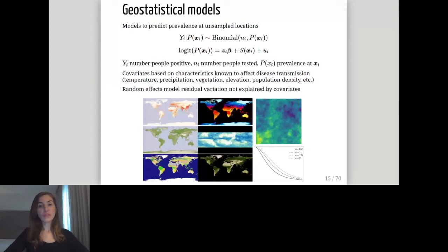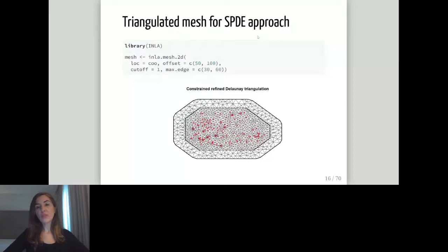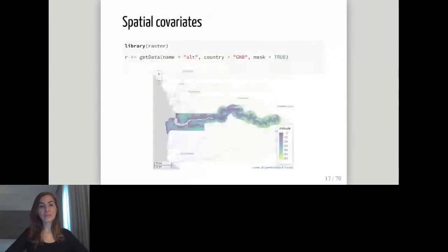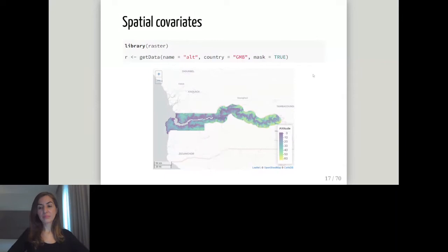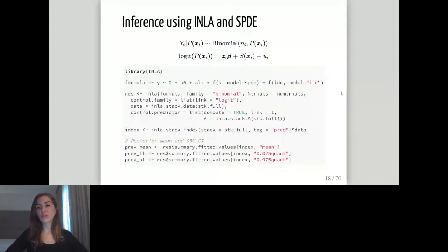To fit this geostatistical model in R, we can use INLA in combination with the SPDE — Stochastic Partial Differential Equation — approach. This approach approximates the continuous Gaussian random field by a discrete Gaussian Markov random field using a triangulation of the region of study. We create a triangulated mesh where estimates are approximated. We also need spatial covariates, which we can get from packages like RASTA, which has a get_data function to download climatic and environmental variables. Then we define the formula, call INLA, and retrieve the results.